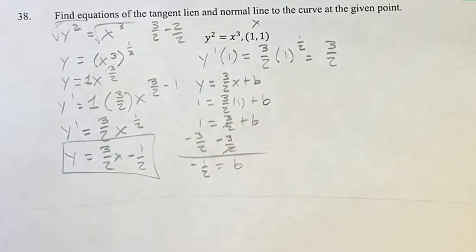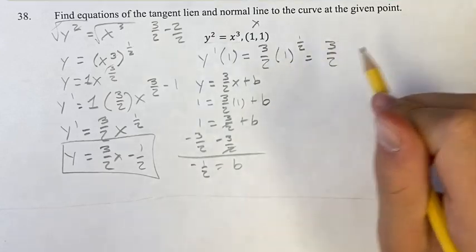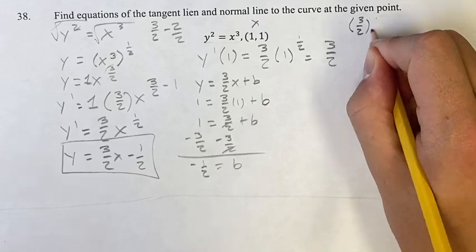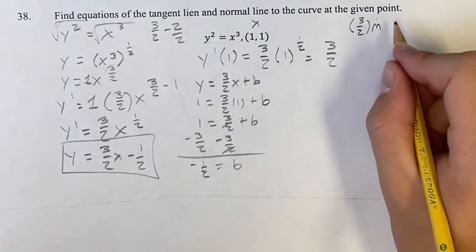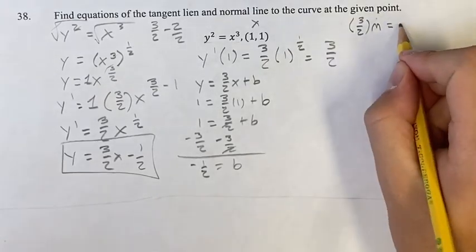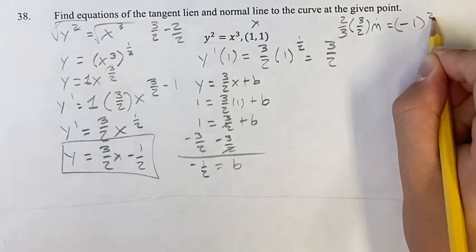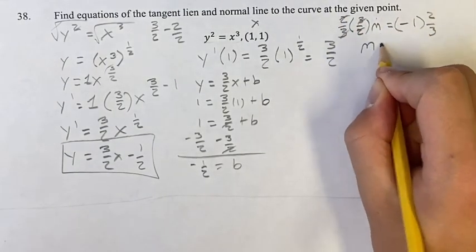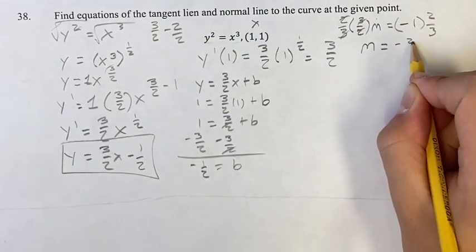How do we find the normal line? The normal line is going to be perpendicular to the tangent line, and that means their slopes are going to be negative reciprocals. So three-halves, the slope of the line we just found, times the slope m of the normal line, is equal to negative one. If we multiply both sides by two-thirds, this cancels, and we have the slope of the normal line on its own, equal to negative one times two-thirds, which is negative two-thirds.